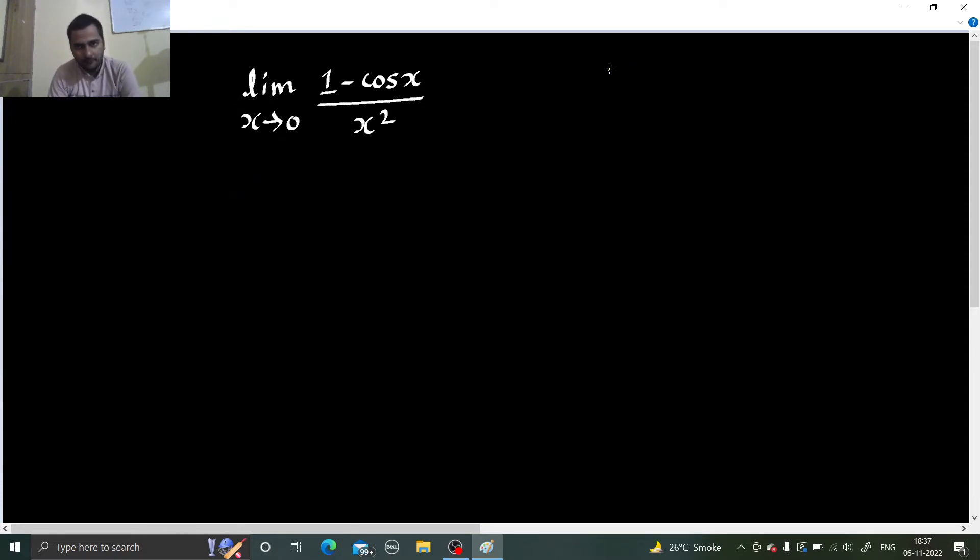So we know that 1 minus cos 2x is 2 sine squared x. Whatever angle is there, that will be half and we will move to square. So power has increased.